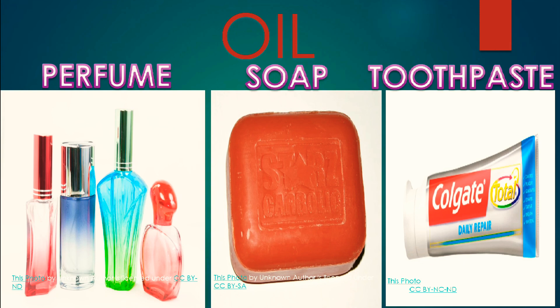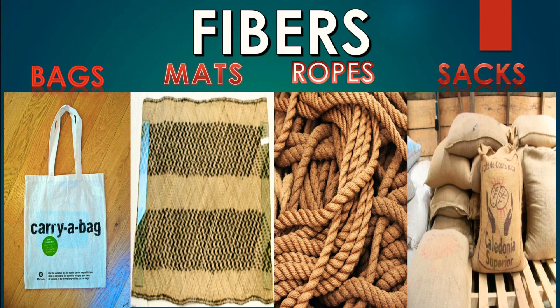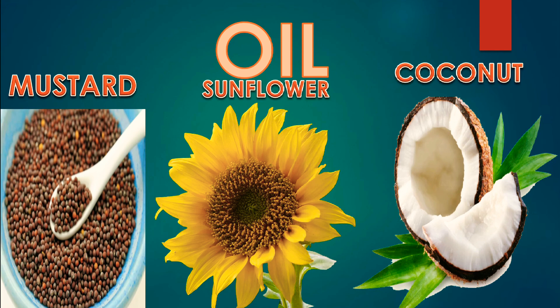Plants give us fibers. We get cotton and jute from plants. Cotton fibers are used to make cotton clothes. Jute fibers are used to make bags, mats, ropes and sacks. We get oil from the seeds of plants like mustard, sunflower and coconut. Oil is used for cooking and oiling the hair.